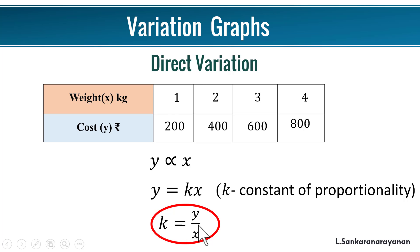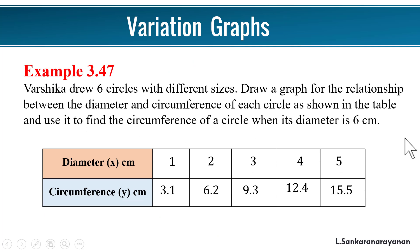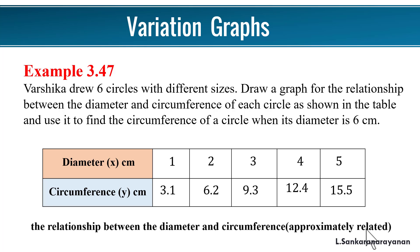Now let us see the example. Varsika drew six circles with different sizes. Draw a graph for the relationship between the diameter and circumference of each circle as shown in the table, and use it to find the circumference of a circle when its diameter is 6 centimeter. Look at the table: 1, 3.1, where 1 is the diameter in centimeters and circumference is 3.1. Actually when you substitute this in the 2πr equation you will get a different answer, so here they take only the approximation results. This approximation is given and we expect this correction in the next edition.